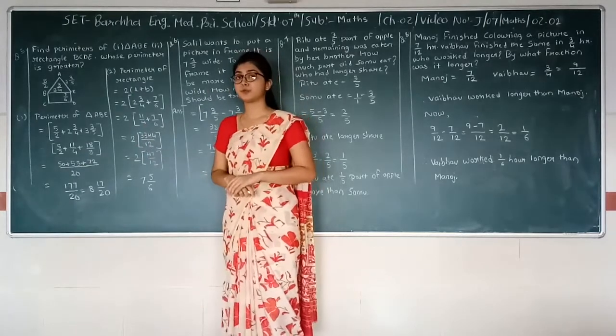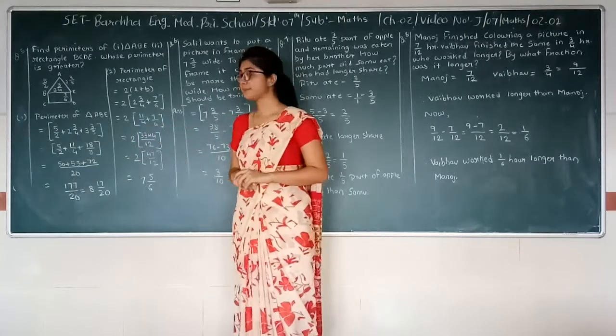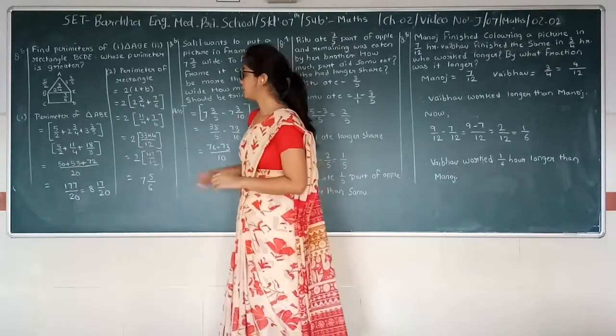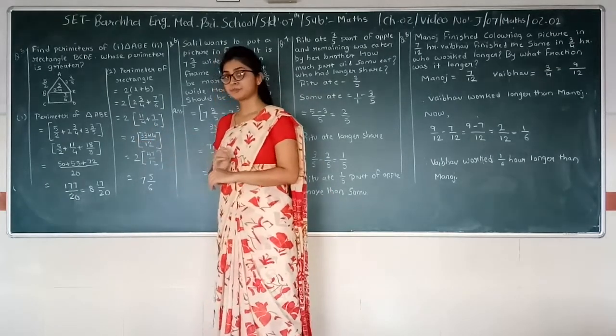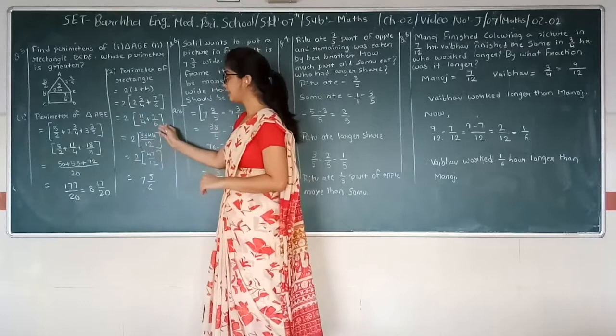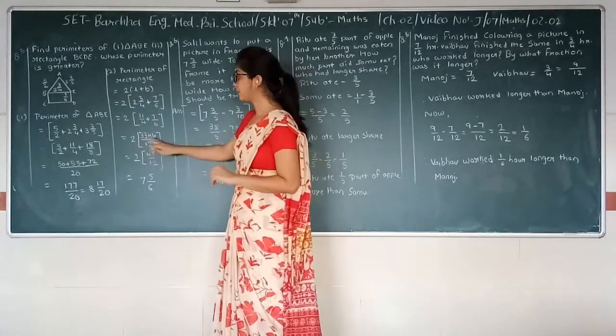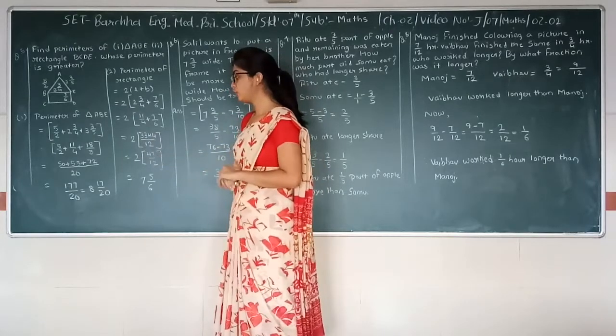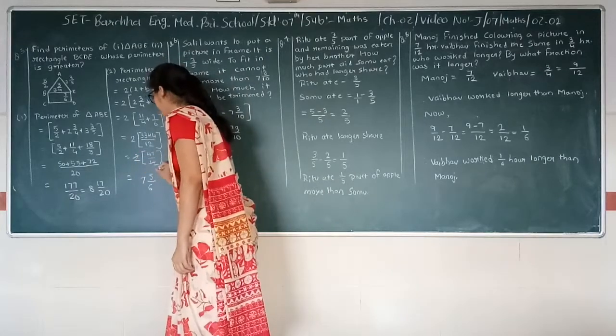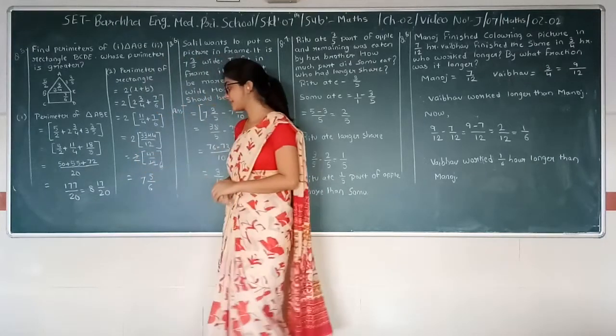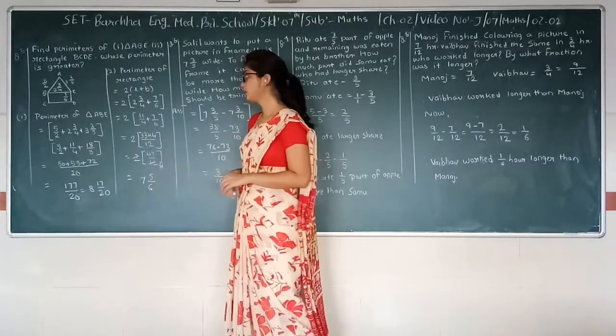11 upon 4 plus 7 upon 6. Now LCM of 4 and 6 will be 12. 12 divided by 4 multiplied by 11 is equal to 33. 12 divided by 6 multiplied by 7 is equal to 14. 33 plus 14 is equal to 47, 47 upon 12. Now 2 times 47 upon 12, so answer will be 47 upon 6 which can also be written as 7 integer 5 upon 6.